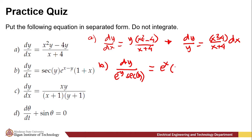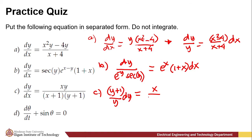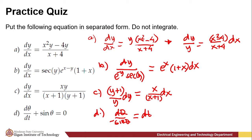For letter C, we have (y + 1)/y dy equals x/(x + 1) dx. For letter D, we have dθ / (negative sin θ) equals dp. These are the answers for the following equations — we just separate the variable of each term.